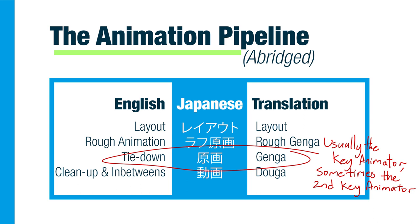This person is called the second key animator, and the process is called Nigen. As the second key animator, your task is to take the rough animation as well as the director's draw overs, and put the characters on model so that the clean-up crew has an easier time with it. And as you might notice, it is completely possible for the key animator or Genga artist to not actually touch Genga, adding to the confusion.